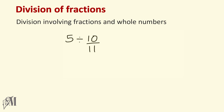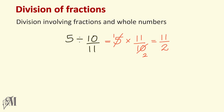Five divided by ten over eleven: just like before, write five as it is, replace division with multiplication, and write the reciprocal of ten over eleven, which is eleven over ten. Five and ten can be cancelled by five, so you get eleven over two. This is an improper fraction, so let's convert it into a mixed number — that is five and a half.